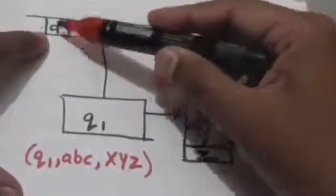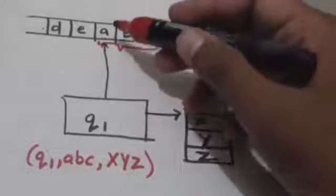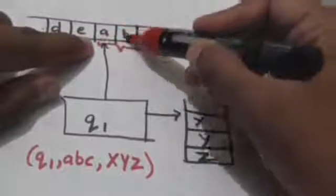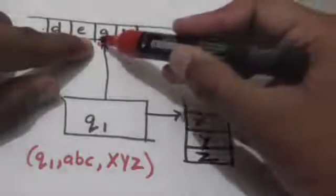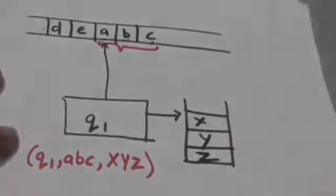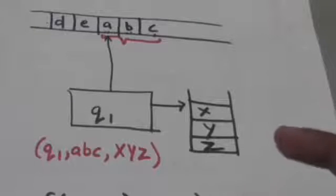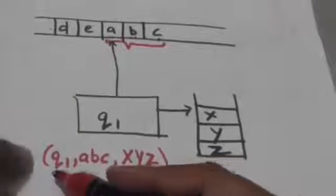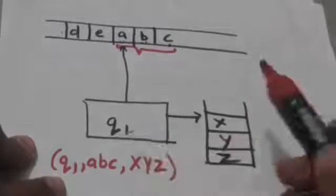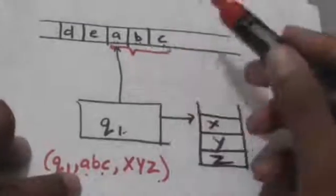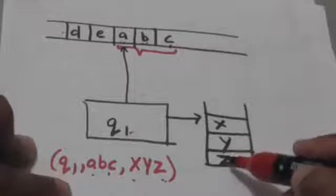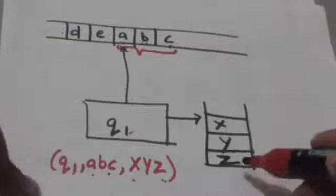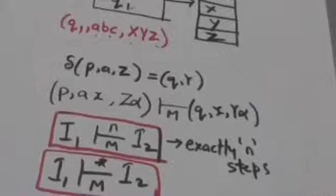The string which is yet to be read by the pushdown automata is a, B, C. The symbols to the left of the read head, that is D and E, have already been read. So when we describe the configuration, we need only the string a, B, C — the input symbols yet to be read. This configuration of the pushdown automata is described by the instantaneous description: q1 is the present state, a B C is the string yet to be read, and X Y Z is the content of the stack from top to bottom.